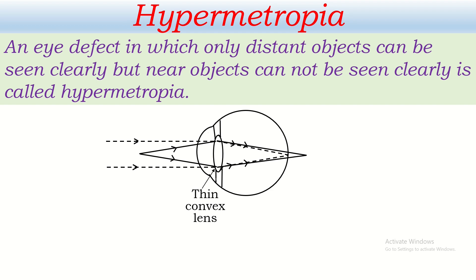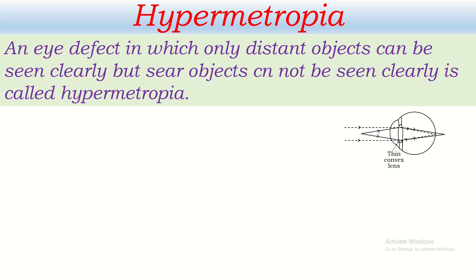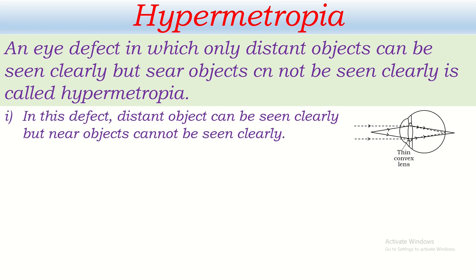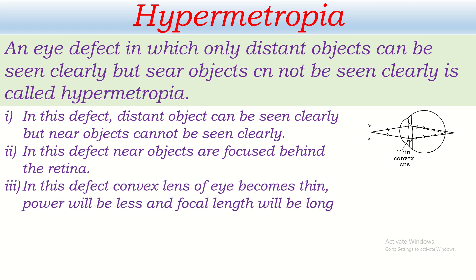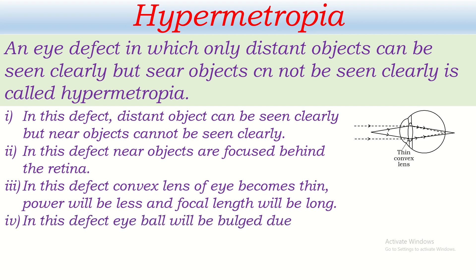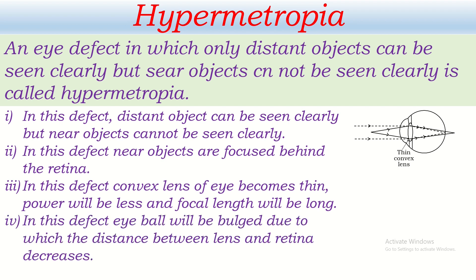What are the characteristics of hypermetropia? In this defect, distant objects can be seen clearly but near objects cannot. Near objects are focused behind the retina. The convex lens of the eye becomes thin, power is less, and focal length is long. Also, the eyeball is bulged, due to which the distance between lens and retina decreases. In a hypermetropic eye, the eyeball is bulged and the distance between lens and retina decreases.